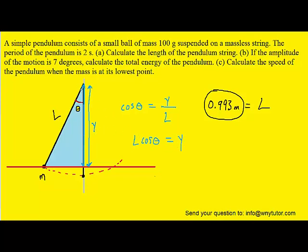L is simply the length of the string, which we know from part A. The angle was given to us as 7 degrees. So we can go ahead and plug in and solve for Y. When you compute that, you should get roughly 0.9855 meters for that distance Y.